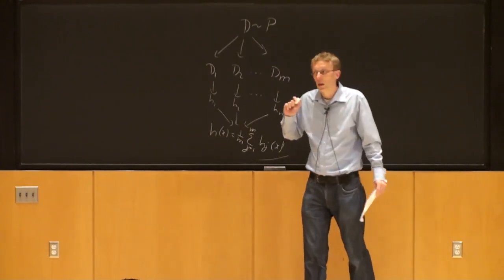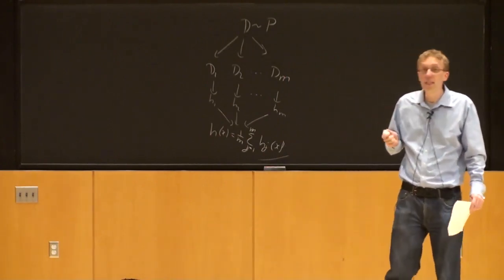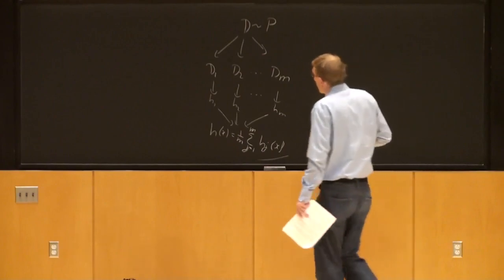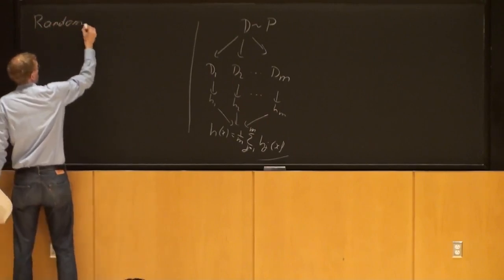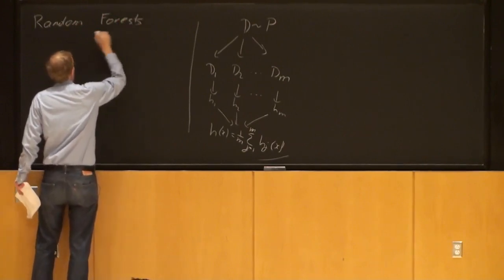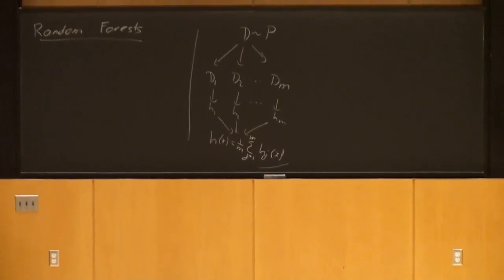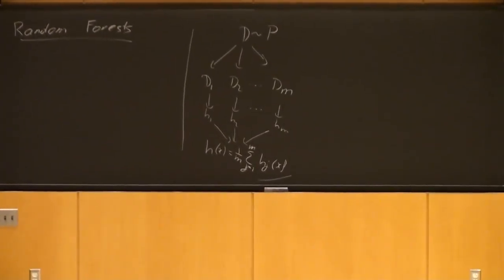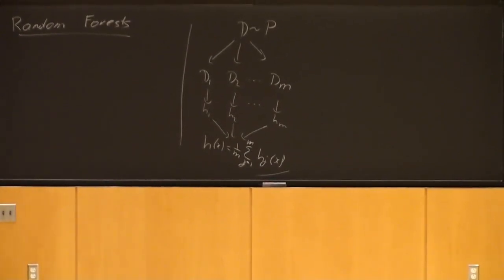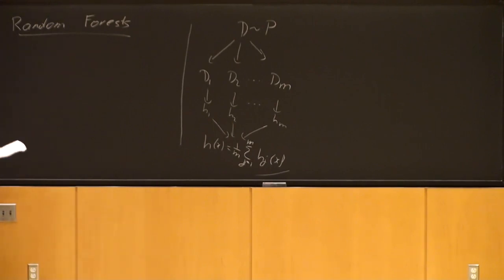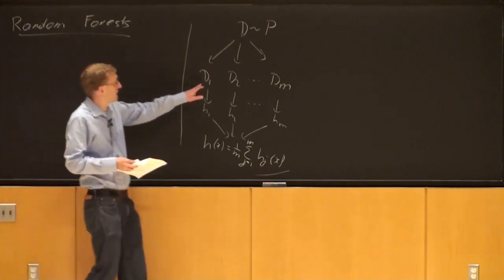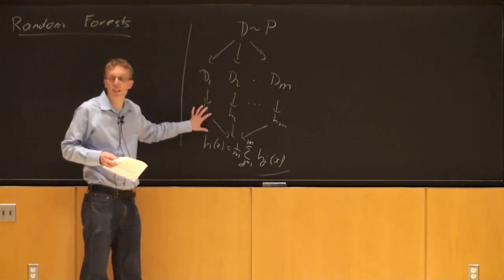One of the most popular instances of bagging is called random forests, and it's a really awesome algorithm. It was almost forgotten and then came back big time. It was also invented by Leo Breiman — the same person who invented bagging. After bagging, he invented random forests. It's basically bagged decision trees with a small modification: you take your dataset D, draw different datasets D1 through DN, and for each one you learn a decision tree.